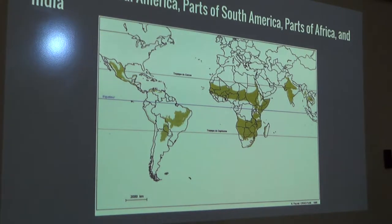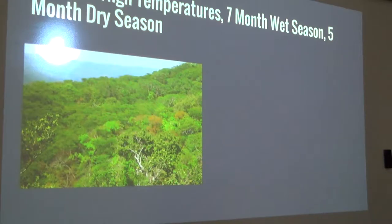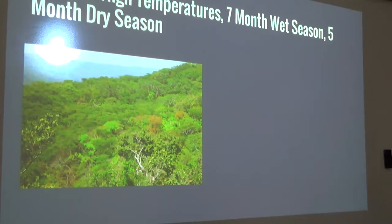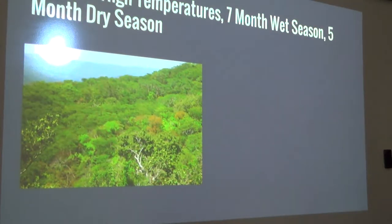The average temperatures in these regions are high, averaging about 65 degrees Fahrenheit. The tropical dry forest experiences a seven-month wet season and a five-month dry season. In the northern hemisphere, the month of May acts as both the end of the dry season and also the wettest month of the year.